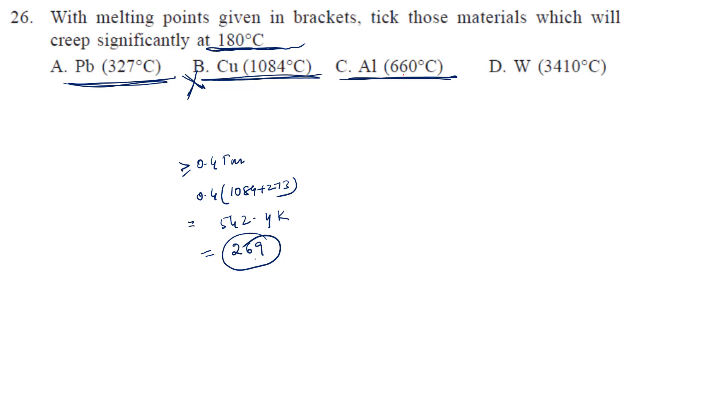Now see aluminum, it's 660. Let's find for this. It's 373.2 Kelvin, and in degrees centigrade it's 100. So for aluminum, creep can start at 100 degrees. Creep can happen. Tungsten is 3410, so you can directly say there's not going to be any creep in tungsten.